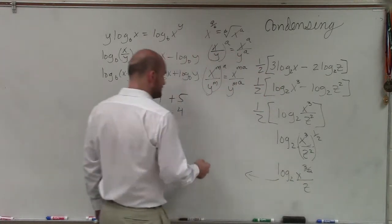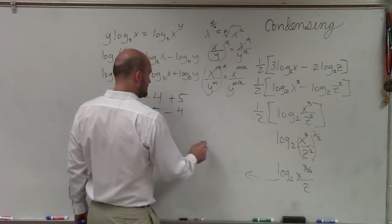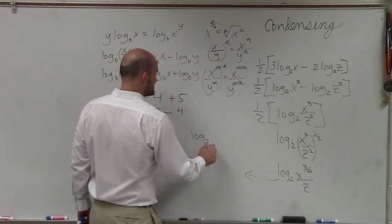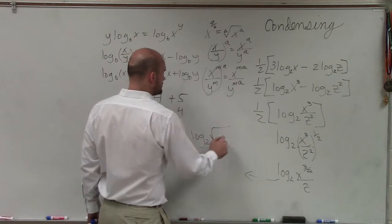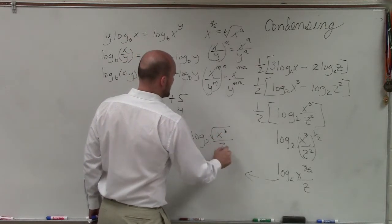Then I can rewrite this. Let's get a little bit more room. Now I want to rewrite this as my root. So therefore, the 3 halves root is going to be log base 2 of the square root of x cubed divided by z.